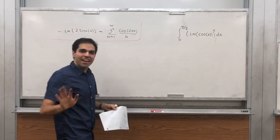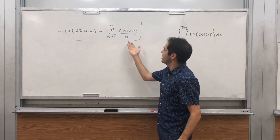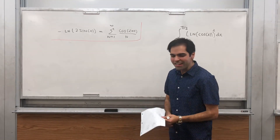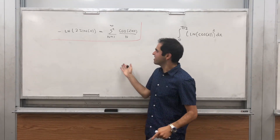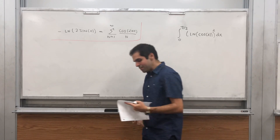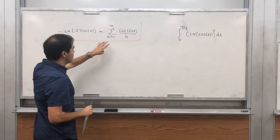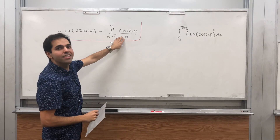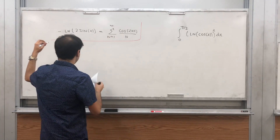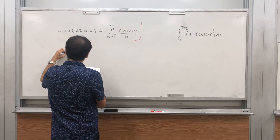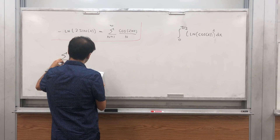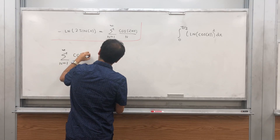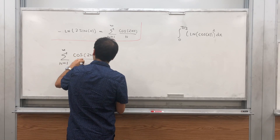You might think it involves Fourier series, because it is technically a Fourier series, but the proof is very elementary in the sense that it just uses calculus. The way to do this is to start with the right-hand side and show that it becomes the left-hand side. So let's start with the sum from n = 1 to infinity of cos(2nx) / n.